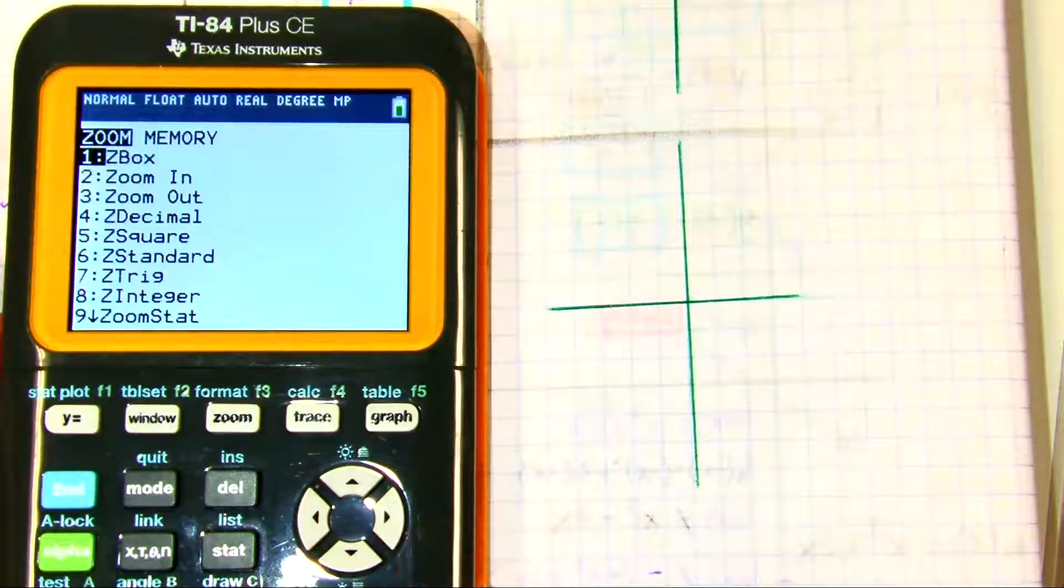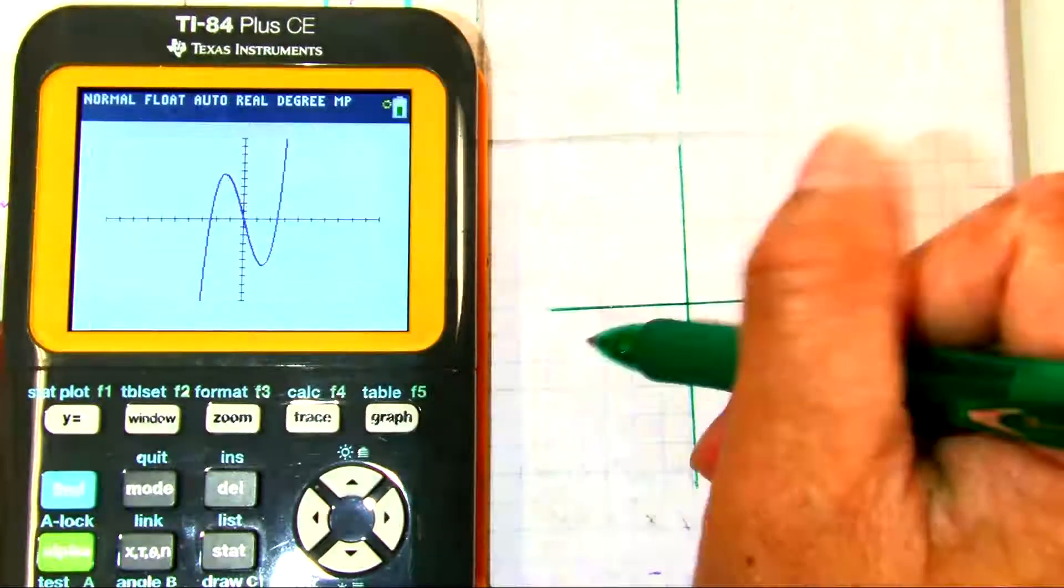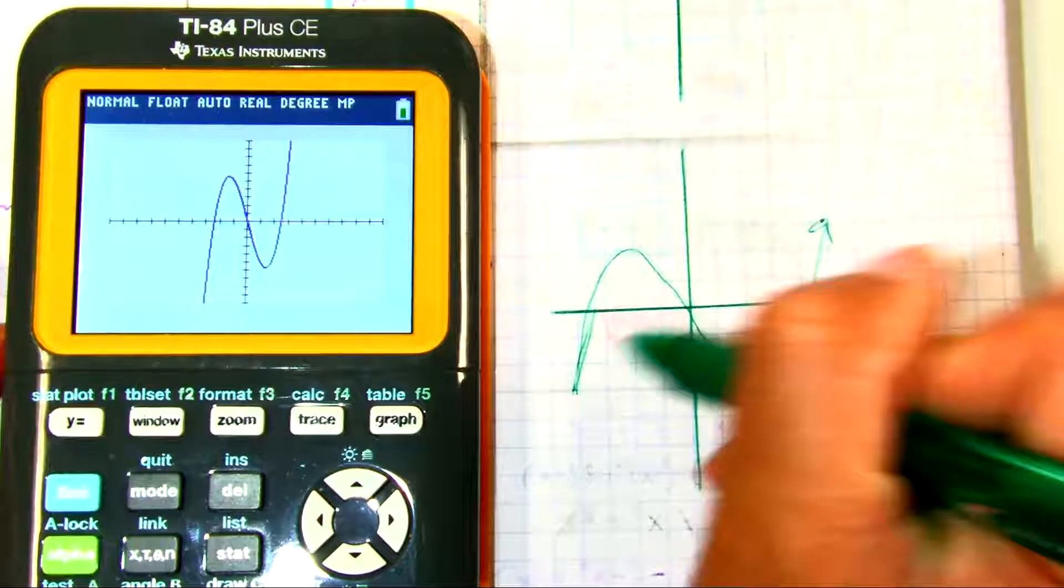X cubed minus 6x. Zoom, 6. Something like that.